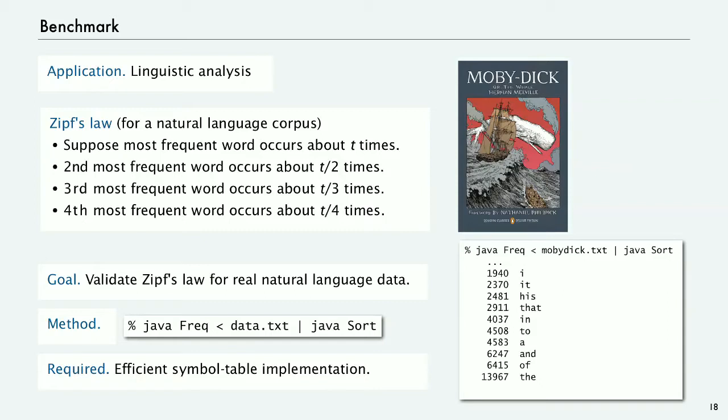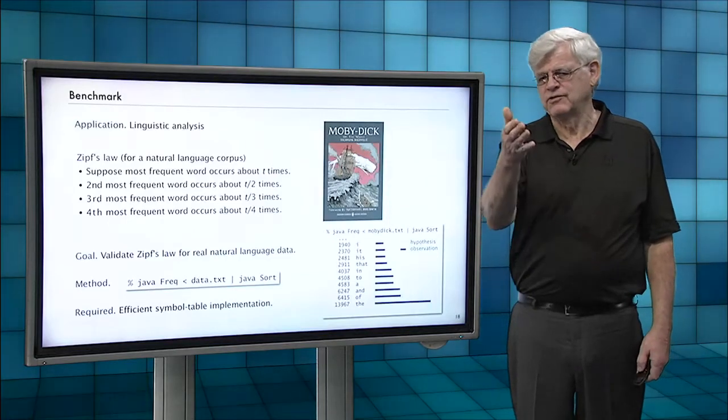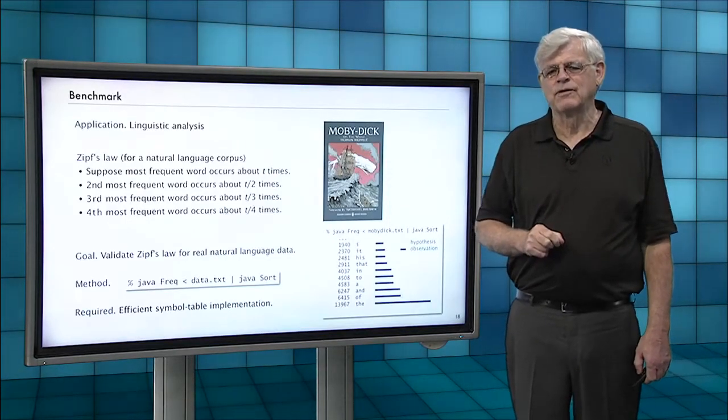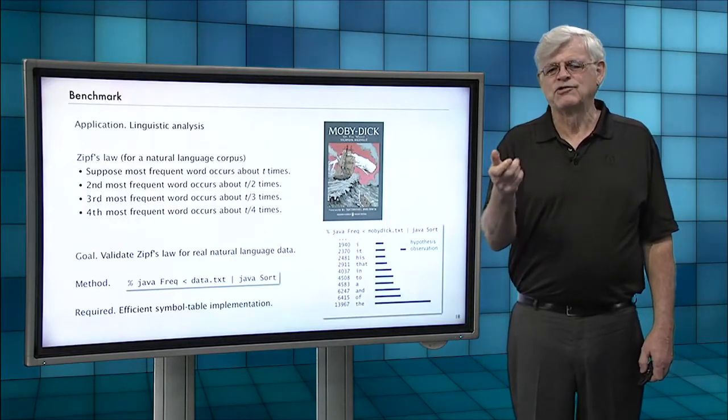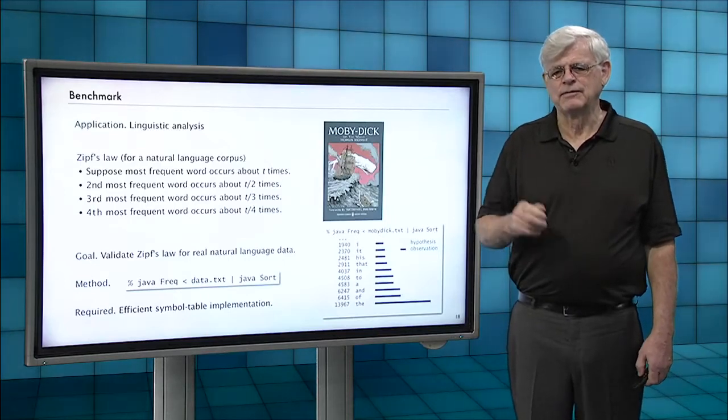For example, here's the result of running this for Moby Dick, which has about a million words. We have an efficient implementation, but that's going to be difficult to do unless you have a good symbol table implementation. This is a validation of Zipf's Law for Moby Dick—it's not too far off. You can see the observation versus the hypothesis, and it's pretty close.